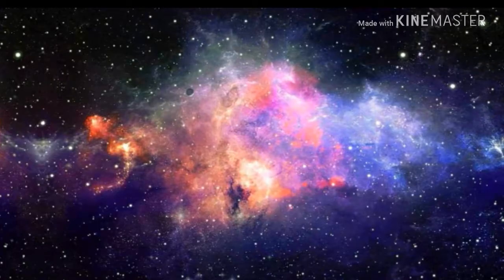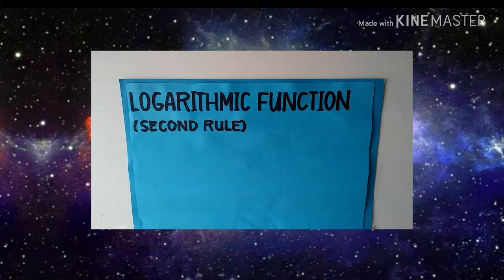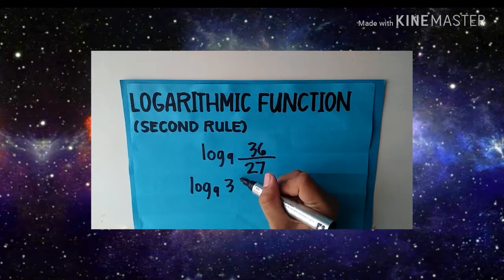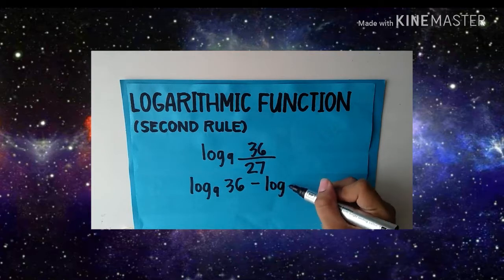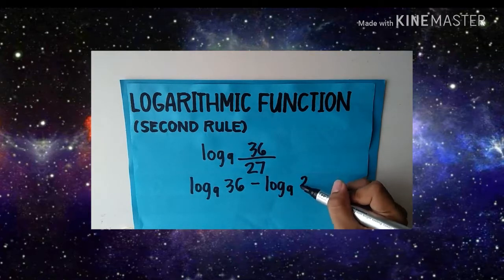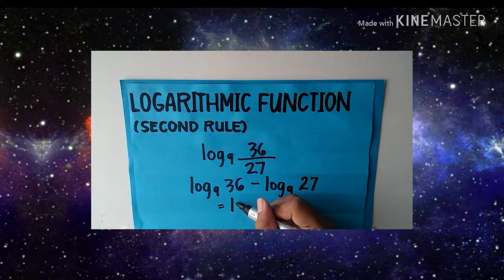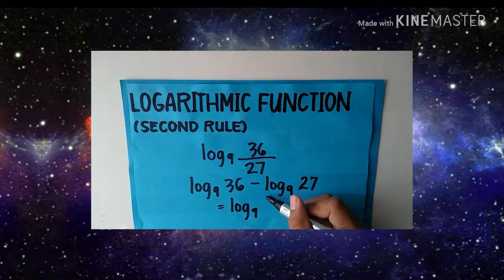The second example is the second rule: logarithm of 36 over 27 with base 9. Copy log base 9 of 36, change division into subtraction, then copy log base 9 of 27. Simplify: log base 9 of 36 minus 27 equals log base 9 of 9. That's it!